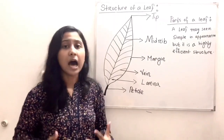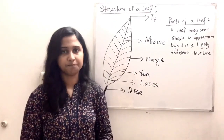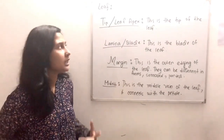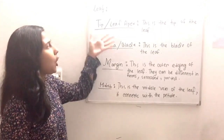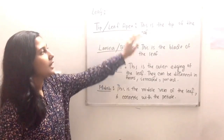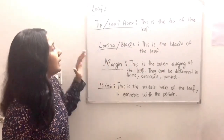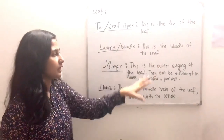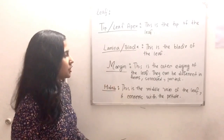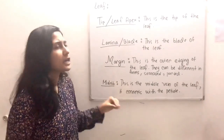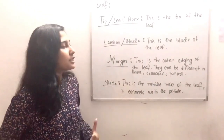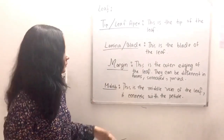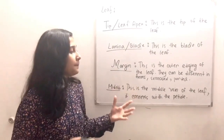Parts of a leaf — a leaf may seem simple in appearance, but it is a highly efficient structure. The tip, or leaf apex, is the tip of the leaf. The lamina, or blade of the leaf, is the main flat surface. The margin is the outer edging of the leaf, and it can be different in form — for example, serrated or parted.